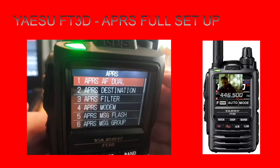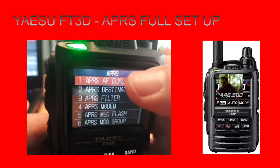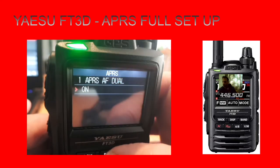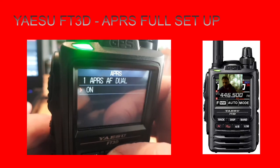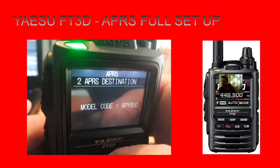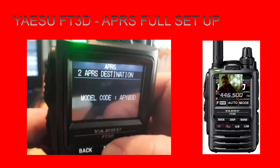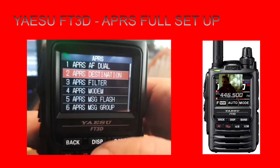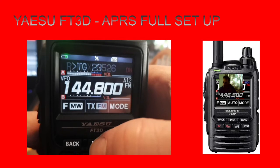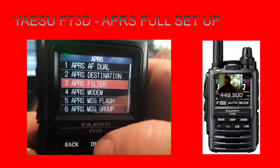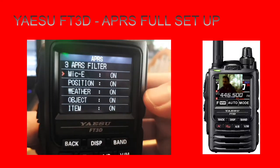Number one: AF Dual - that's turned on, which means you can receive on the radio at the same time. Number two is the default setting. Number three: APRS Filter, so you can decide what's going to be shown and pick and choose the ones you like.